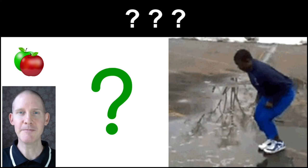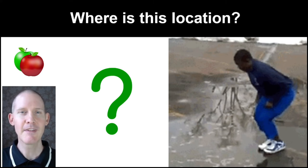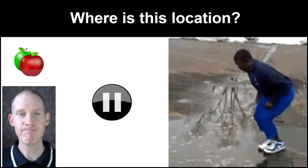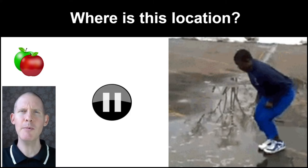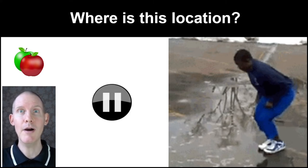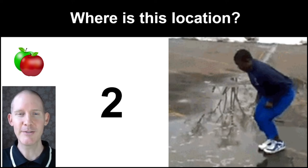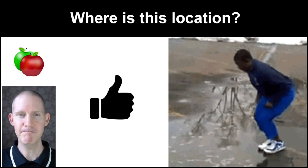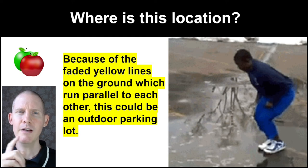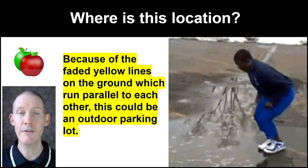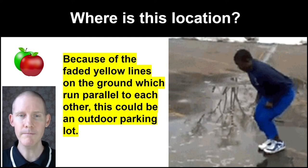Next question: Where is this location? Pause the video, come up with your answer, and we can compare it with mine in five, four, three, two, one. Because of the faded yellow lines on the ground which run parallel to each other, this could be an outdoor parking lot.